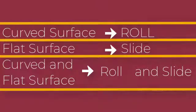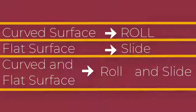So, objects with curved surface always roll. And objects which are flat surface, they slide. But some objects which have both flat and curved surfaces can roll and slide.